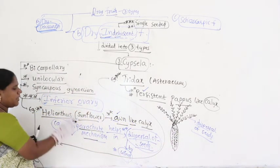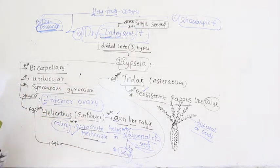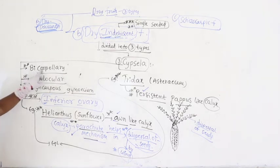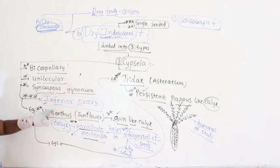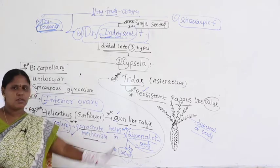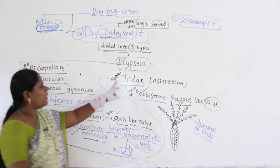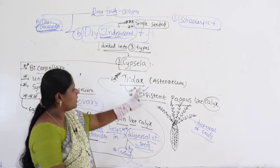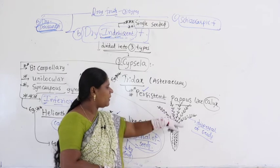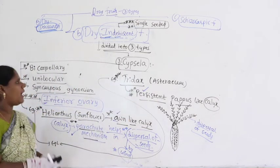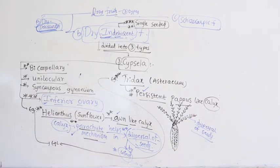The papery calyx helps in dispersal of seeds — this itself is called the parachute mechanism. To summarize cypsela: bicarpellary, unilocular, syncarpous, inferior ovary is very important to remember. Example: Helianthus (sunflower) — awn-like calyx showing parachute mechanism, helps in dispersal of seeds by wind. Parachute mechanism also applicable for Tridax, which has persistent papery calyx — very thin and paper-like, light in weight, helps in dispersal. Both Helianthus and Tridax belong to family Asteraceae.